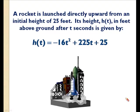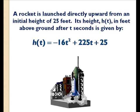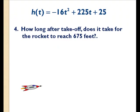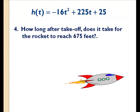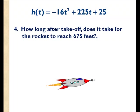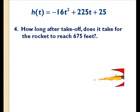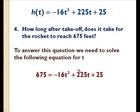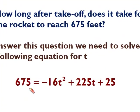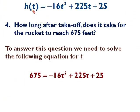This is the third video pertaining to a vertical motion problem. In this video, I'd like to answer the following question: How long after takeoff does it take for the rocket to reach 675 feet? To answer this question, we need to solve the following equation for t. Notice I've replaced h(t) with 675.